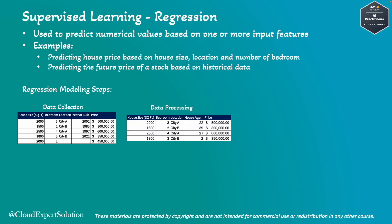Once data is collected, the next step is data processing, where we clean the data, handle any missing values, and normalize features if necessary. In our example, we have a row with missing values which we eliminated. We also had a 'year of build' column that didn't seem like an important parameter for pricing, so we calculated house age from it instead. This is an example of feature engineering, which we will cover in a separate section.